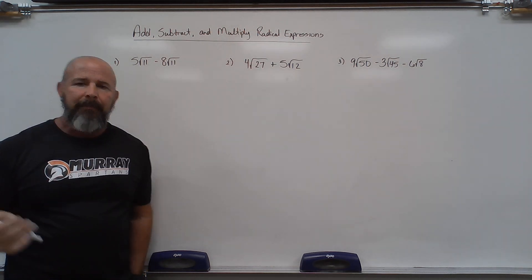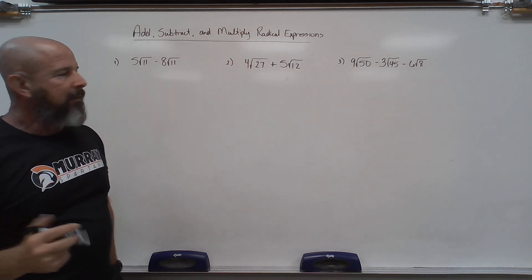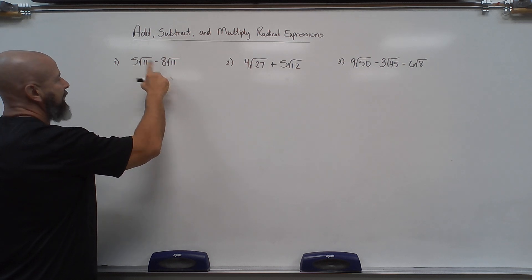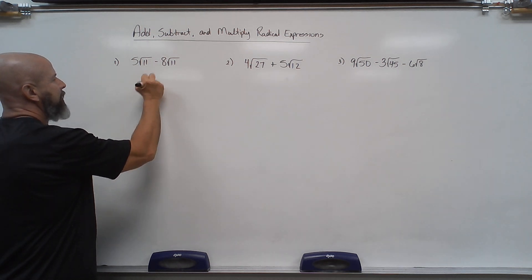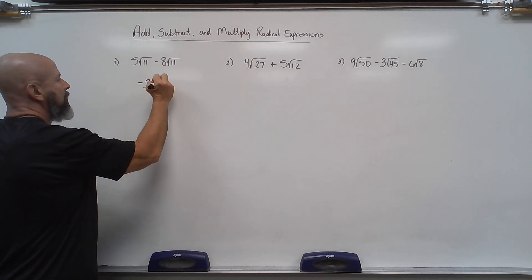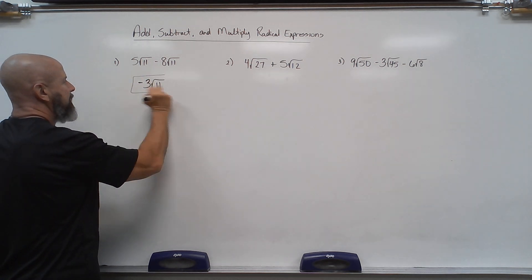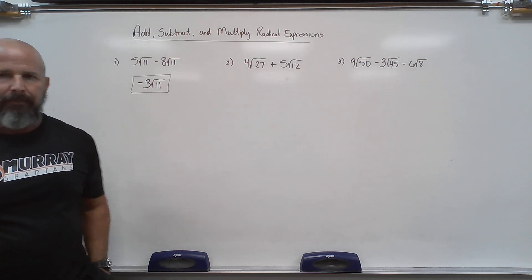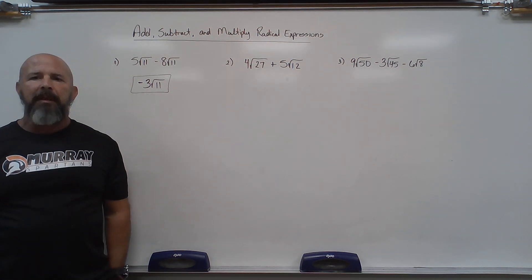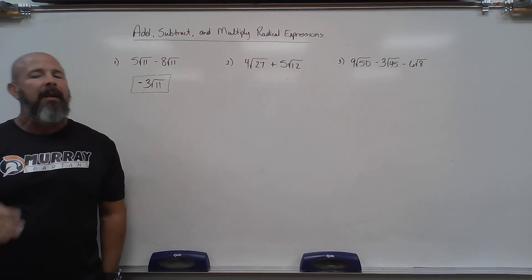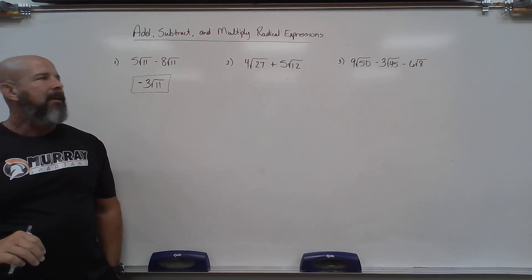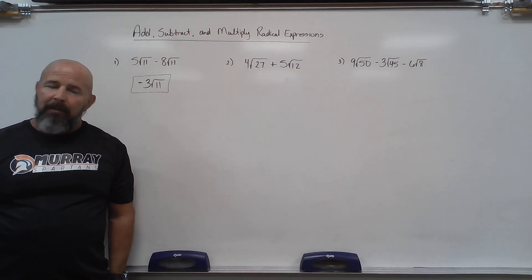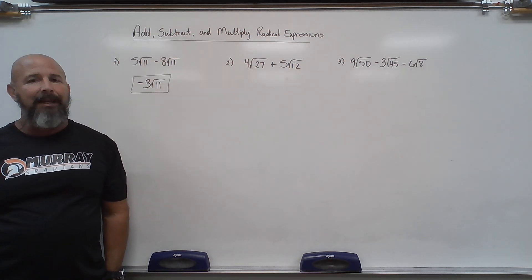If they're the same, I can combine them. So I've got 5 minus 8, which is negative 3. If they're the same I can combine them, but if not, either I can't put them together or I've got some work to do.